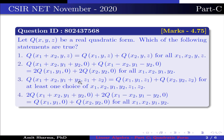Option 3: Q(x1+x2, y1+y2, z1+z2) is equal to Q(x1, y1, z1) plus Q(x2, y2, z2) for at least one choice of x1, x2, y1, y2, z1, z2. Option 4: 2·Q(x1+x2, y1+y2, 0) plus 2·Q(x1−x2, y1−y2, 0) is equal to Q(x1, y1, 0) plus Q(x2, y2, 0) for all x1, x2, y1, y2.